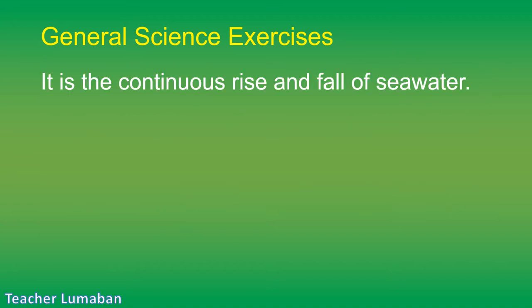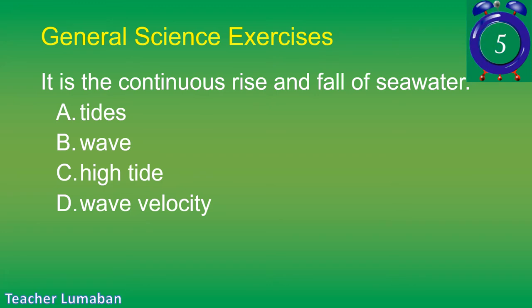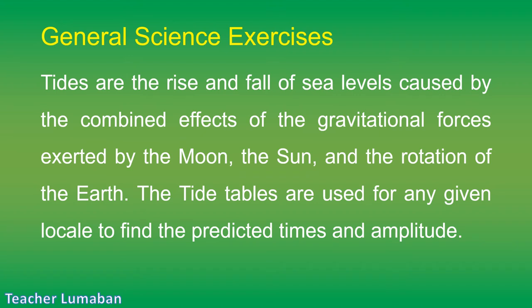What is the continuous rise and fall of sea water? Letter A: tides. Letter B: wave. Letter C: high tide. Letter D: wave velocity. The correct answer is Letter A: tides. Tides are the rise and fall of sea levels caused by the combined effects of the gravitational forces exerted by the moon, the sun, and the rotation of the Earth. Tide tables are used for any given locale to find the predicted times and amplitude.